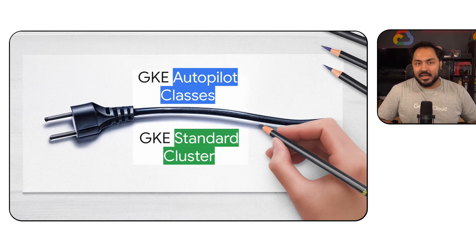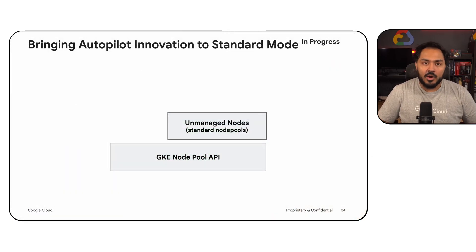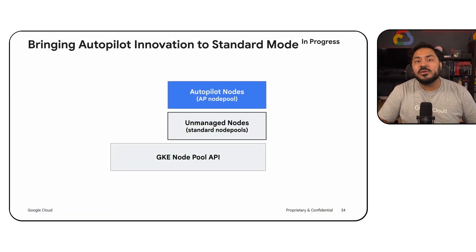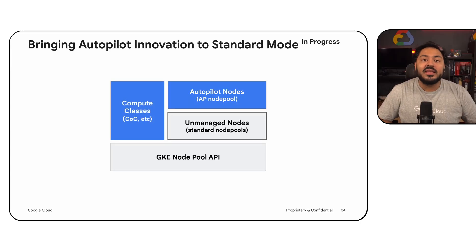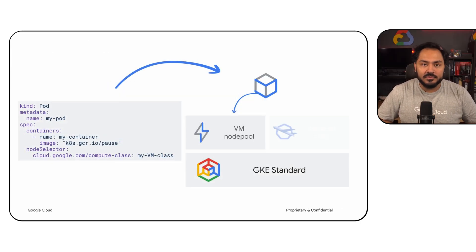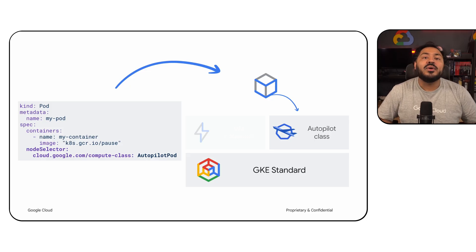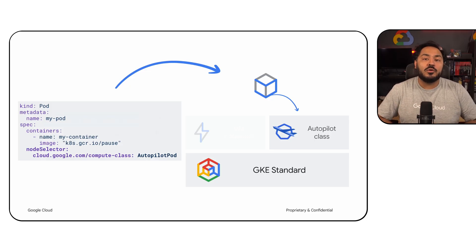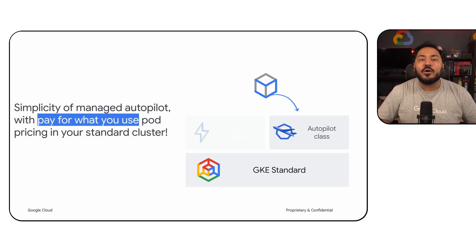Autopilot Compute Class in GKE Standard is in private preview. It enables users to use Autopilot features inside Standard mode without the need to choose between operating modes. It can now run workloads in Autopilot's secure user space environment with reduced operational overhead and automated capacity provisioning.